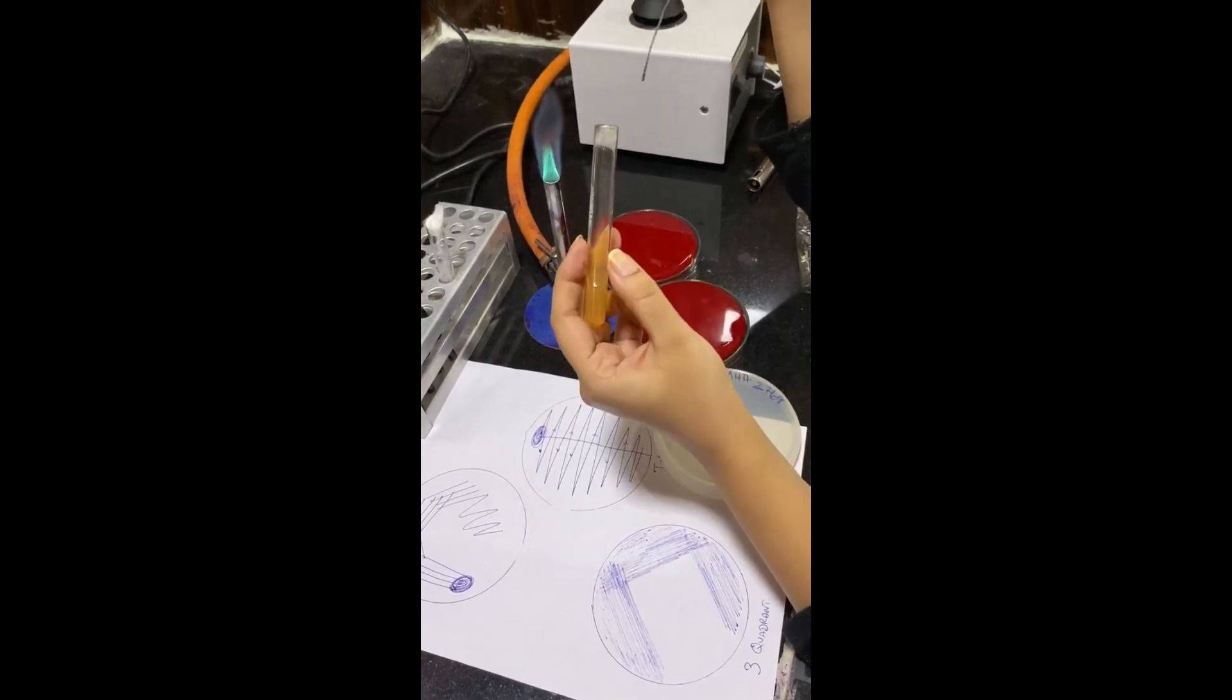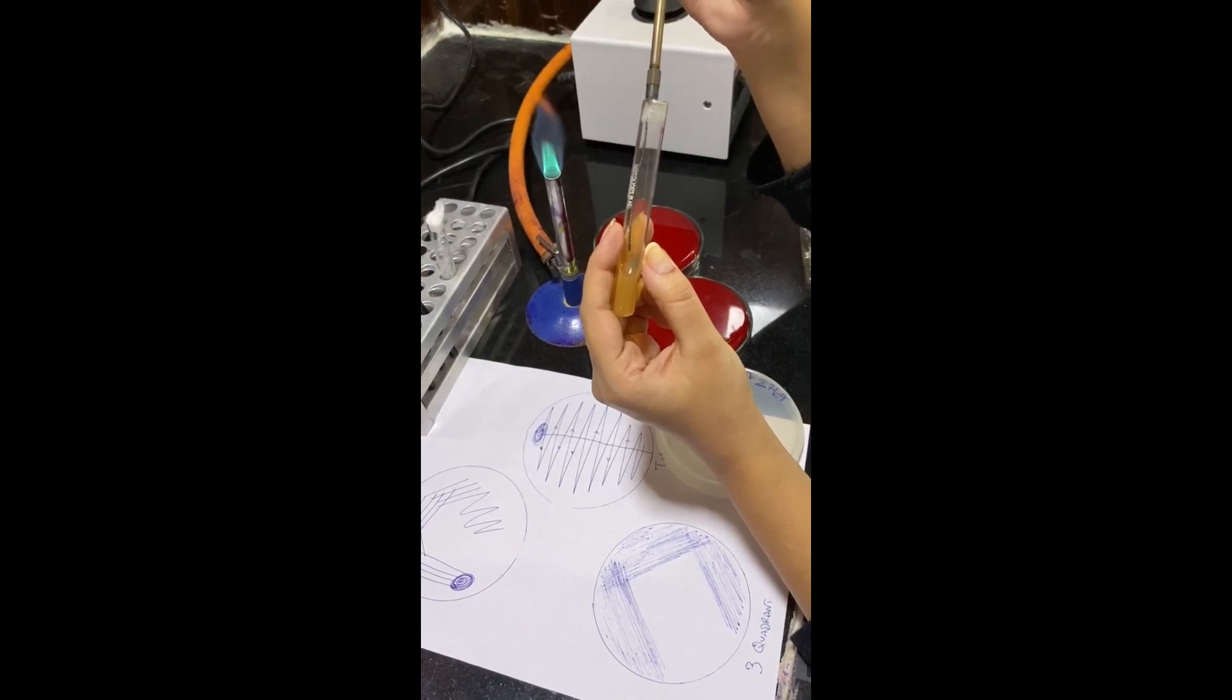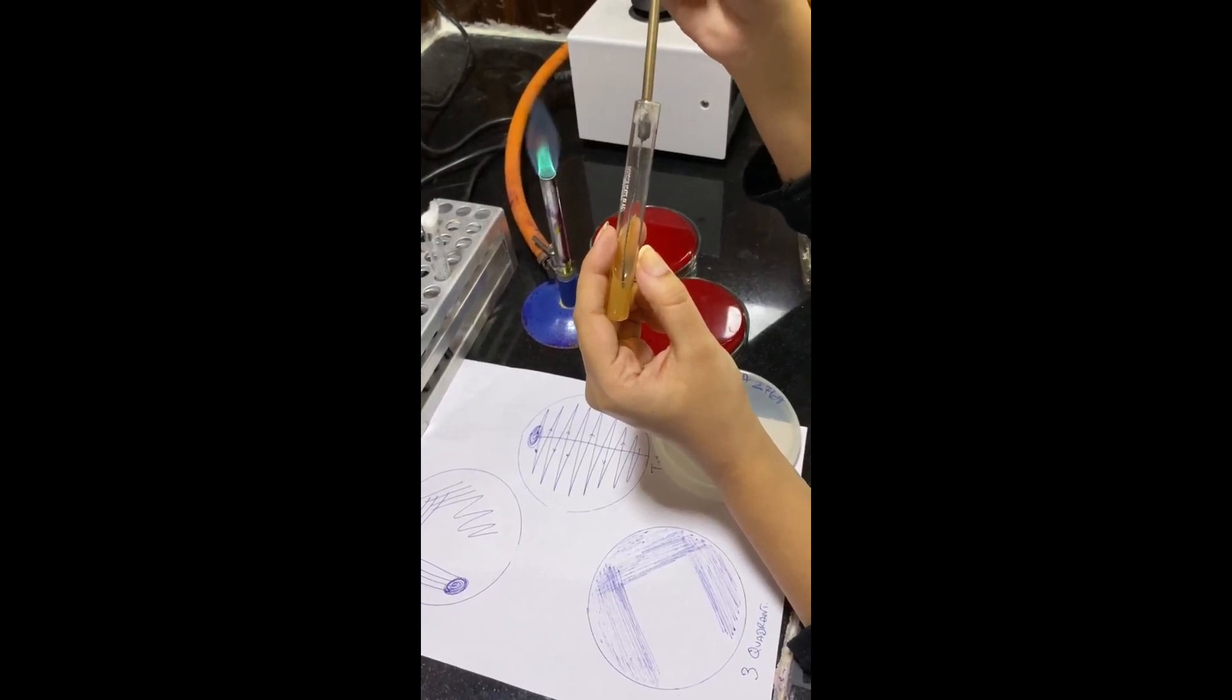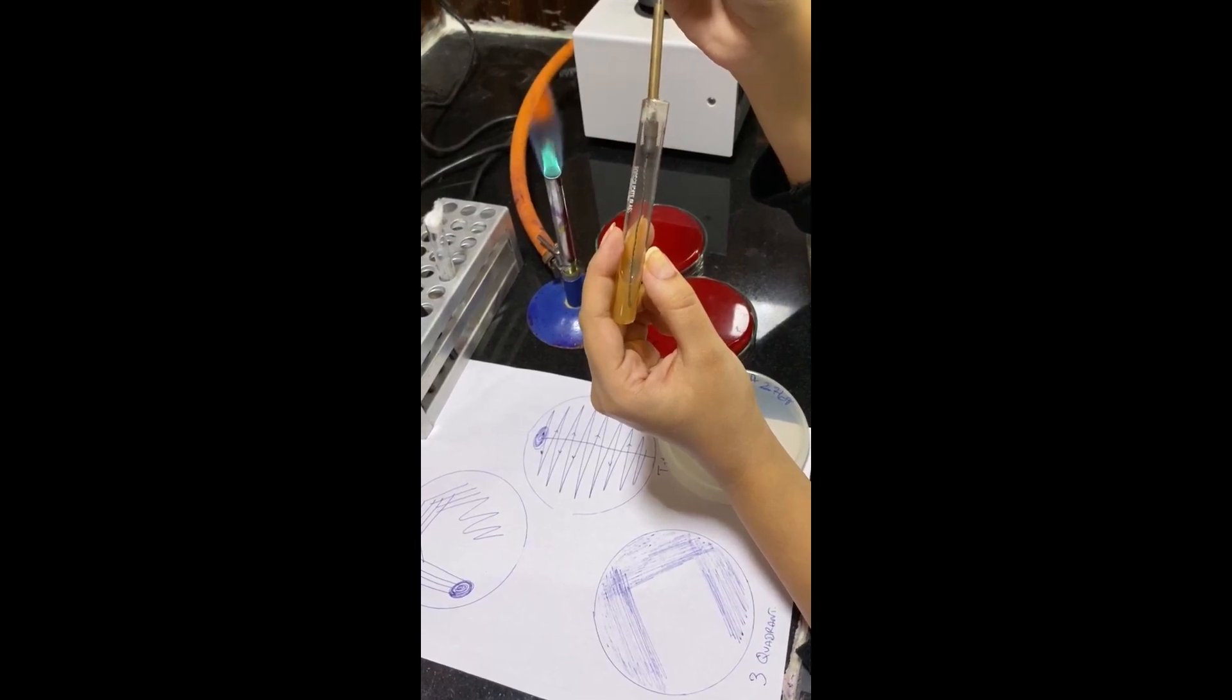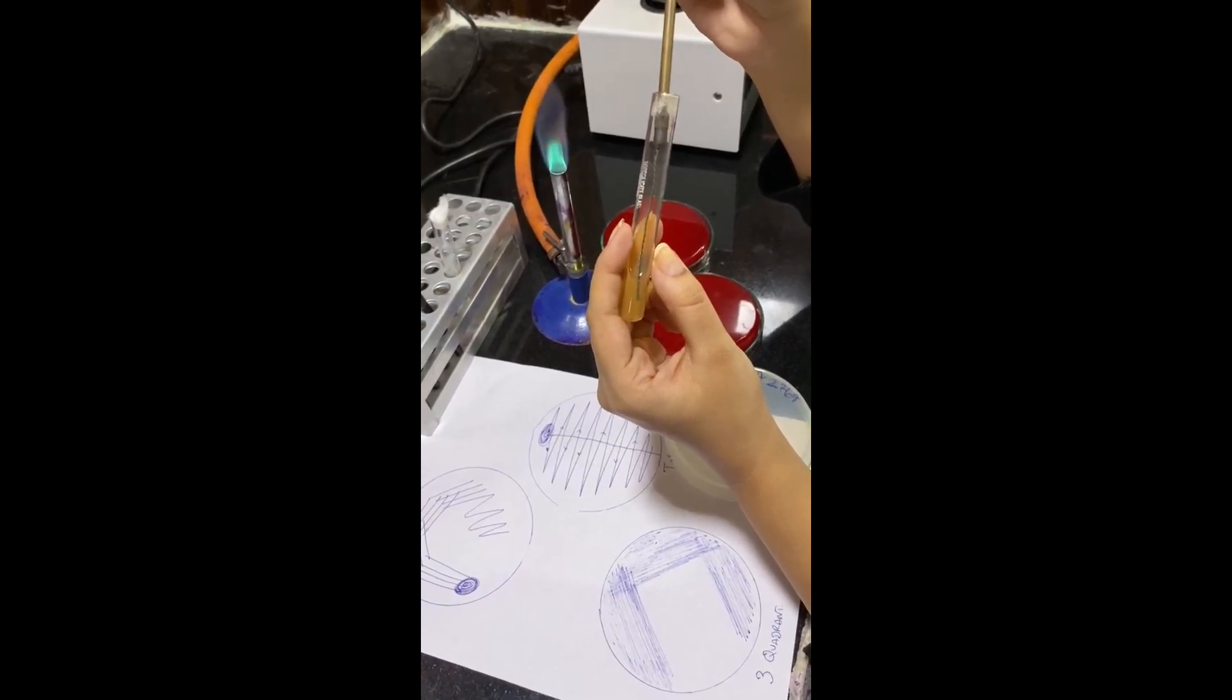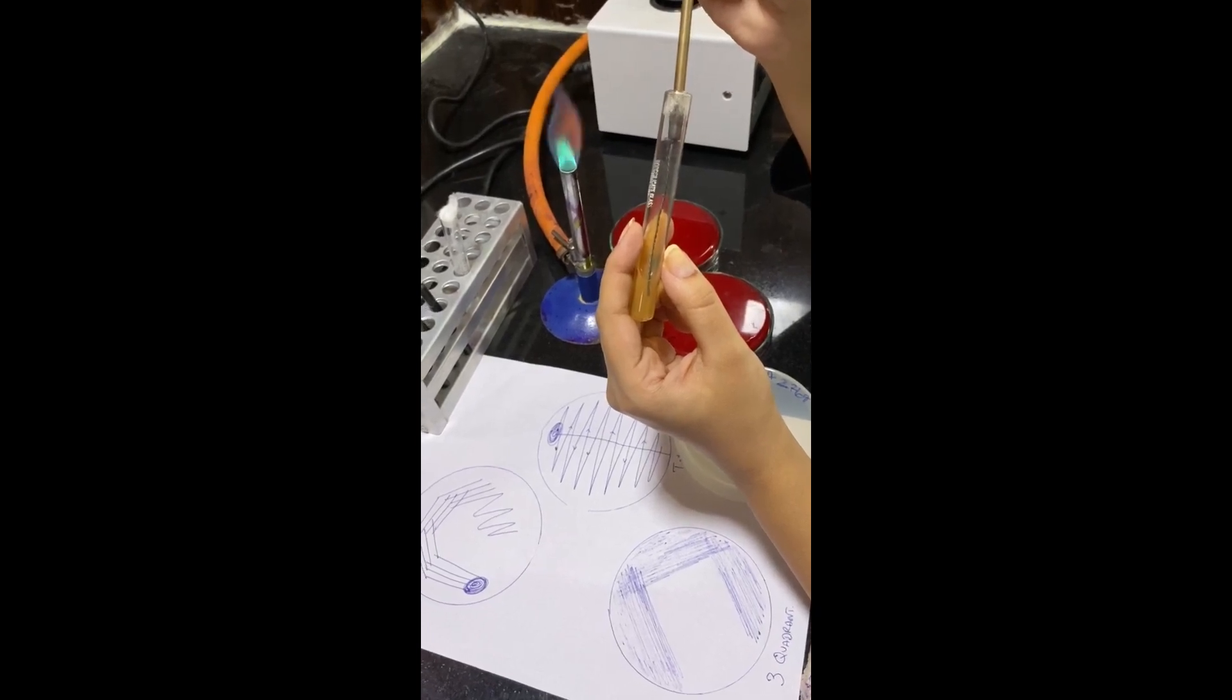Now for stab method, care should be taken that the medium pierces the butt within two to three millimeters of the bottom and not touch the bottom of the butt to maintain anaerobiasis. Like this.